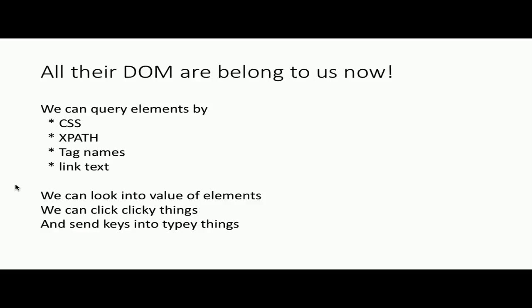That was the easy part. In this part we briefly showed that we can interact with the browser. We can find elements in a web page — we can find them by their names, by their CSS classes, by a language for acquiring elements in a tree called XPath, and by link text for a button or for an href.